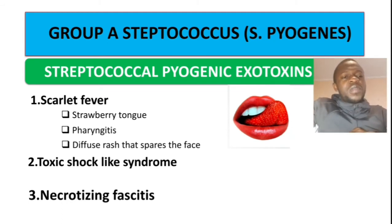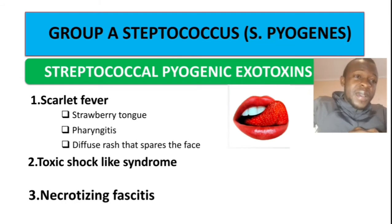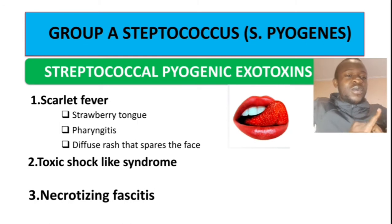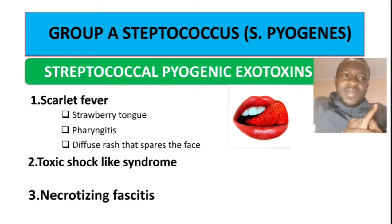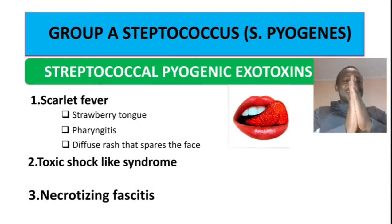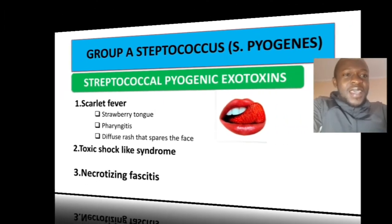Now let's talk about the complications of primary infection by Group A Streptococcus. There are two: rheumatic fever and acute post-streptococcal glomerulonephritis.